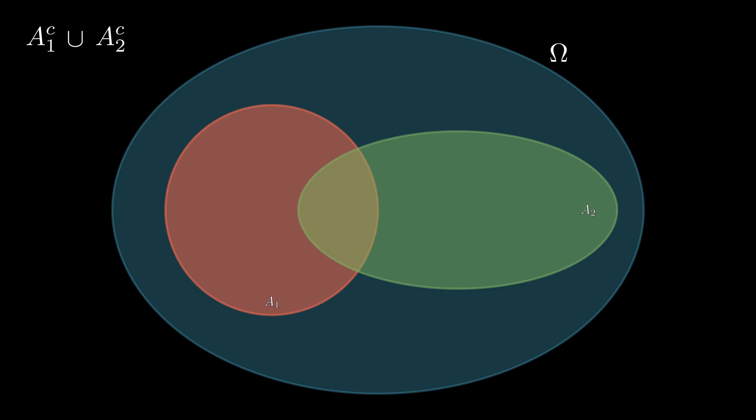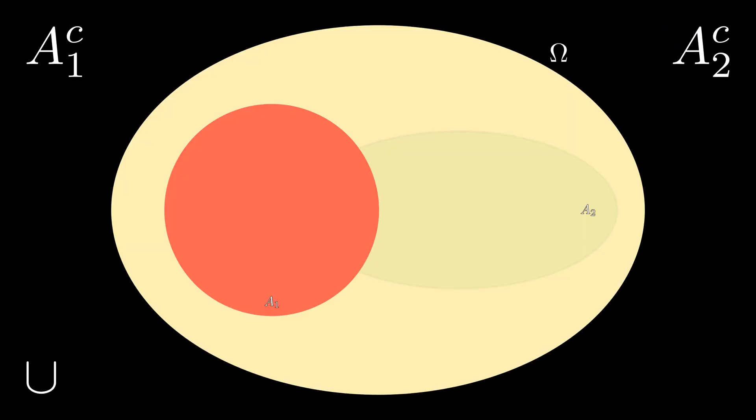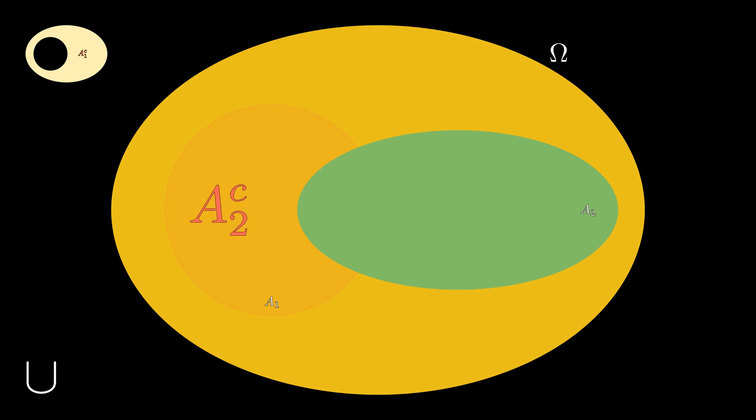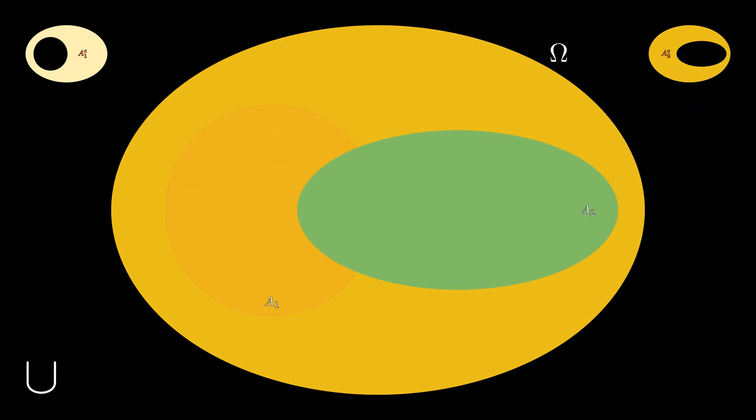First things first. We need to find A1 complement. And the way we did this previously is we isolated A1, and we found everything but A1. So that's A1 complement. Now we do the same procedure for A2. We isolate A2, and we find everything that is not A2. So let's take that and put it on the right.